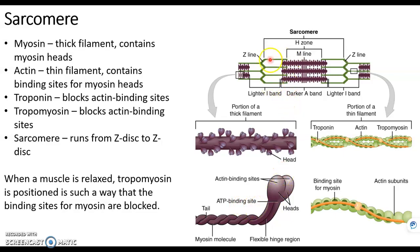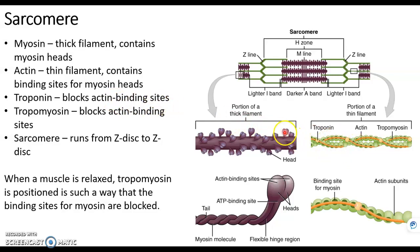If we look a little closer at actin, which is the thin filament in green, we can see that it's made up of all of these little openings or holes. We call those binding sites or active sites. Myosin heads fit nicely inside these openings.